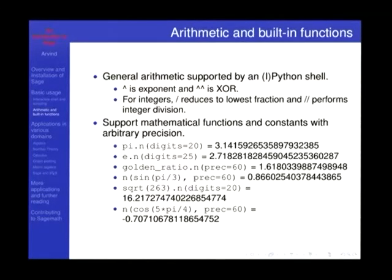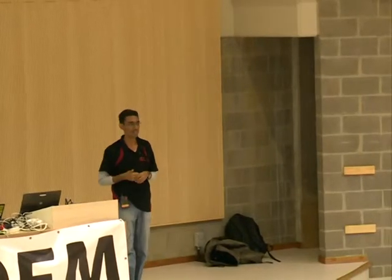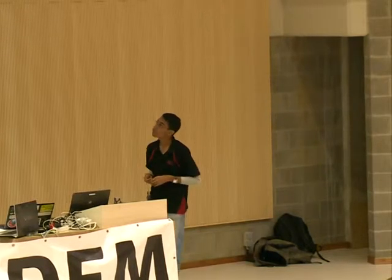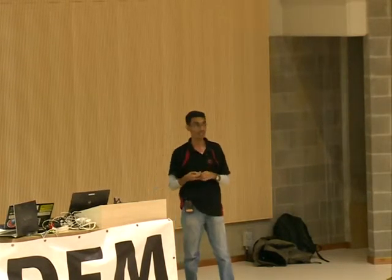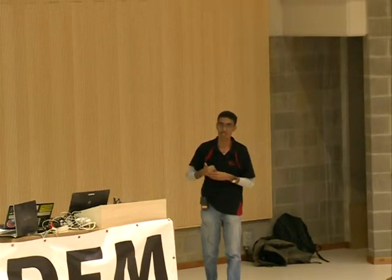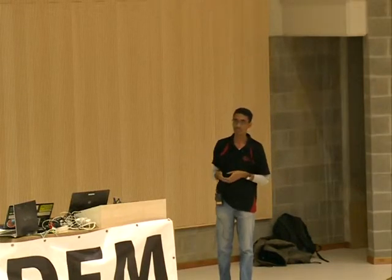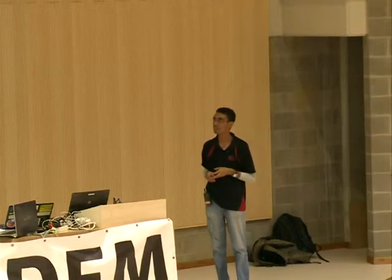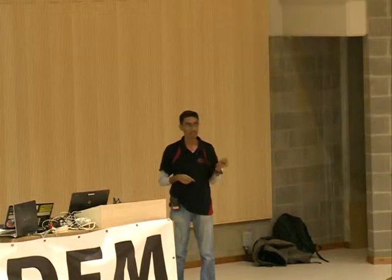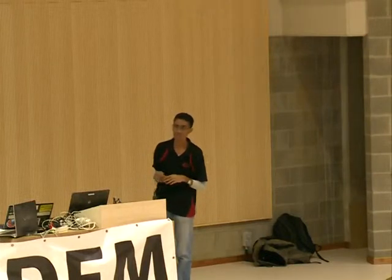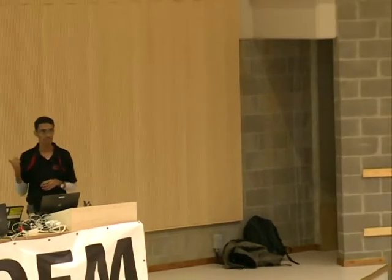A few differences from the Python shell: the single caret does the mathematical exponent function, while double caret does XOR. A single slash gives you the lowest fraction, and double slash does integer division. Everything else is mostly the same. You also have built-in mathematical functions and constants — you can get them with arbitrary precision, specified in digits or bits. Constants like pi, e, and the golden ratio are available. The 'n' function does numerical approximation, and you have sine, cosine, and square root to arbitrary precision.